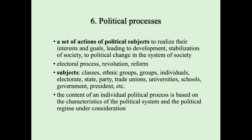Topic number 6 is political processes. Political processes are a set of actions of political subjects to realize their interests and goals, leading to development and stabilization of society, and to political change in the system of society. Examples of political processes are electoral processes, revolution, or reform. The subjects of political processes include classes, groups, individuals, electorate, state, party, trade unions, universities, schools, government, presidents, and so on.